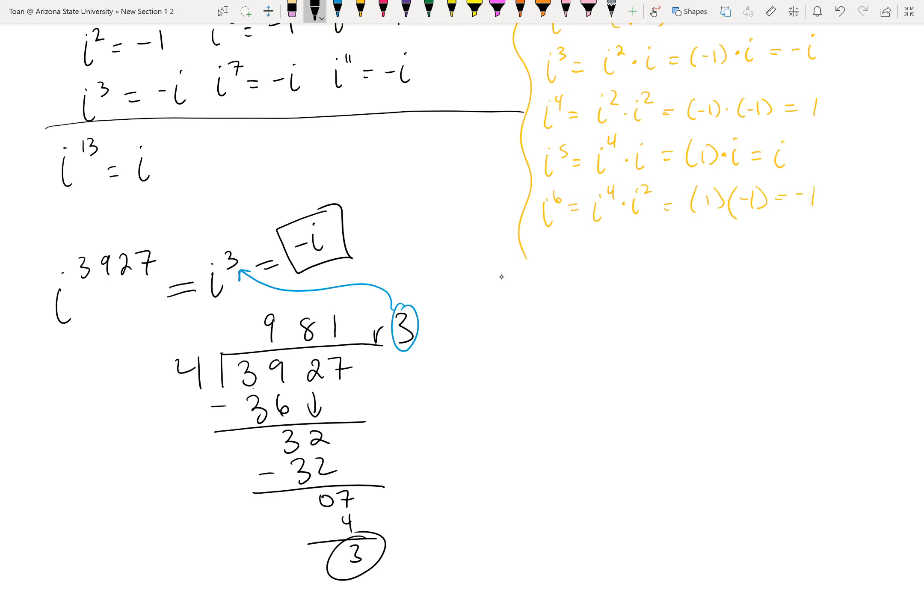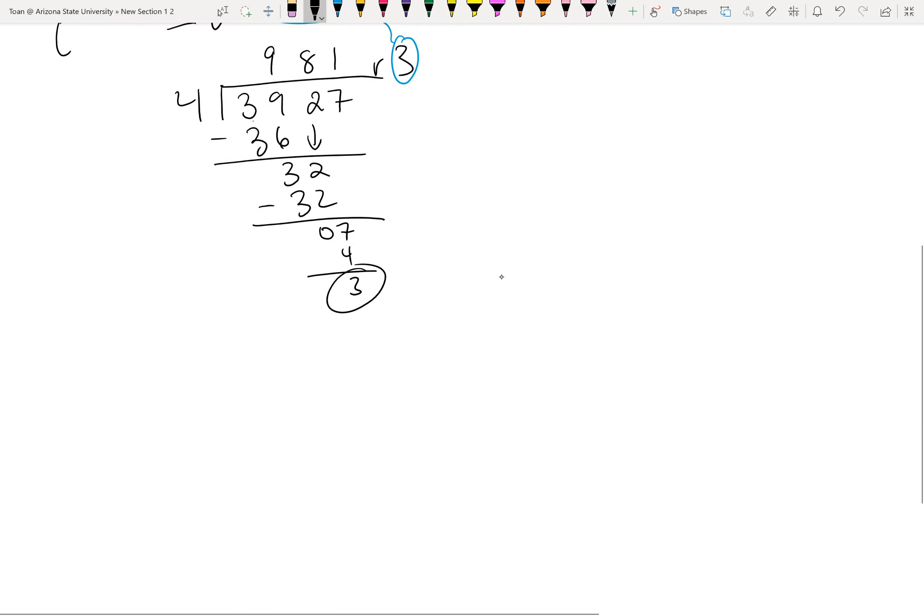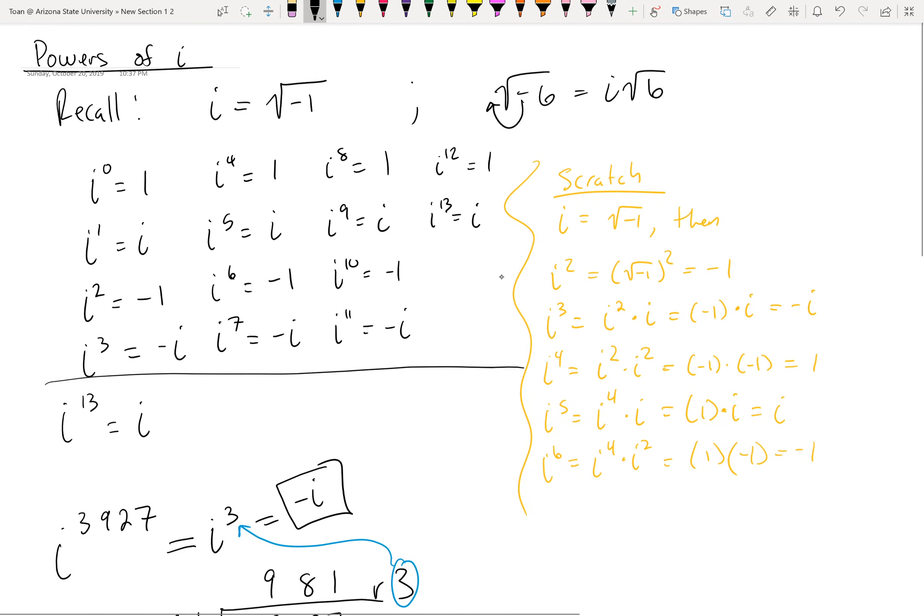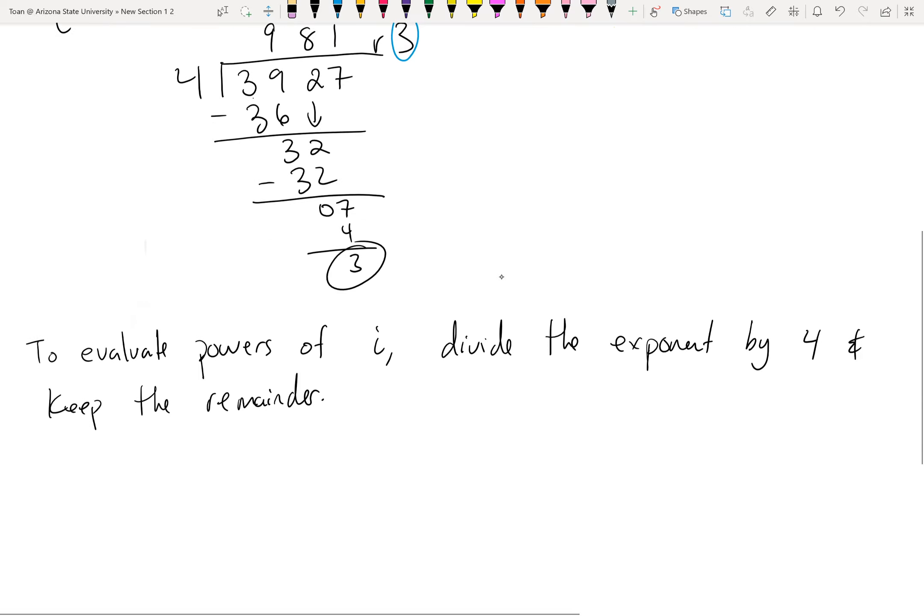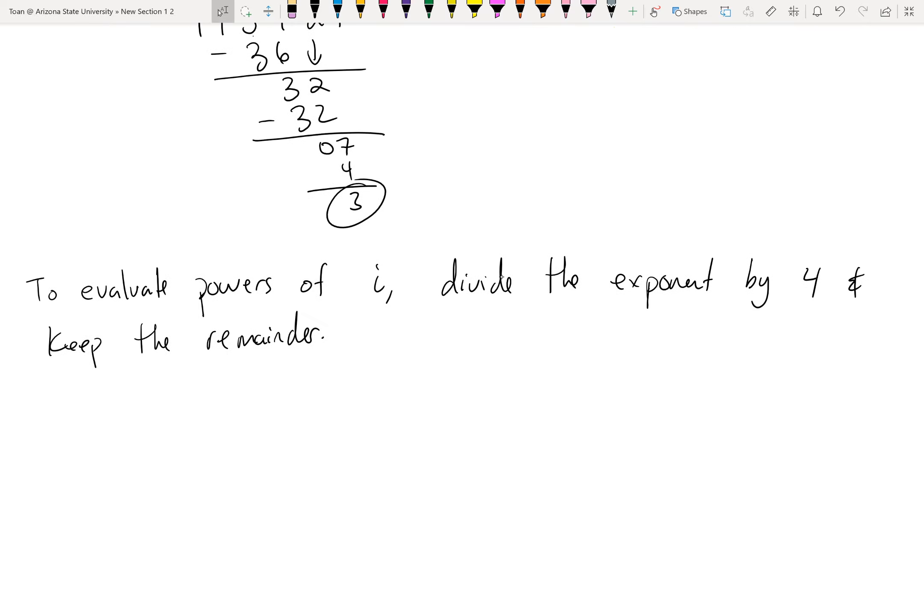To evaluate powers of I, divide the exponent by four and keep the remainder. So, do you need to memorize this entire list? No. But you definitely need to memorize the first column. So I'm actually going to add it to the list here. So to evaluate powers of I, divide the exponent by four and keep the remainder.